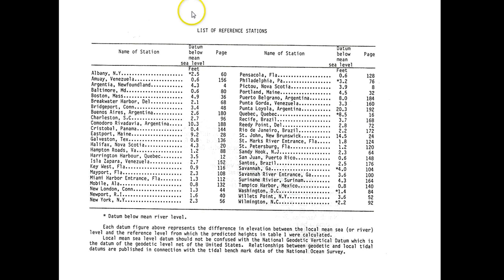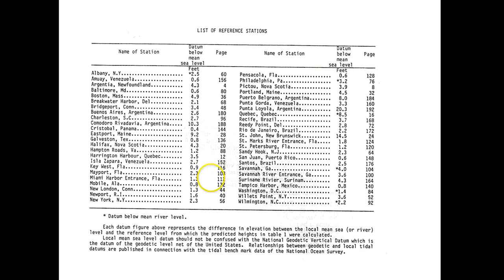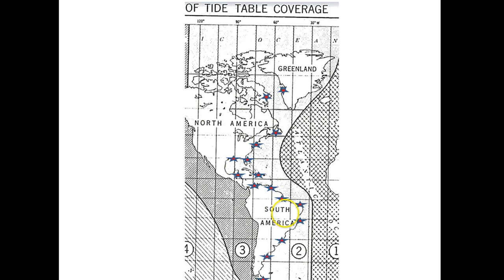If you had every station all along the entire east coast of the Americas, you'd fill your ship up with books. So what happens is there are something like 30 reference stations spread out along the coast of the Americas. I just placed stars in various positions to express an idea — these are not the actual places of stations, but this is where reference stations might be. If you wanted to calculate your tide at a given location, you might calculate it as a correction off of whatever you get from the daily predictions for the reference stations.